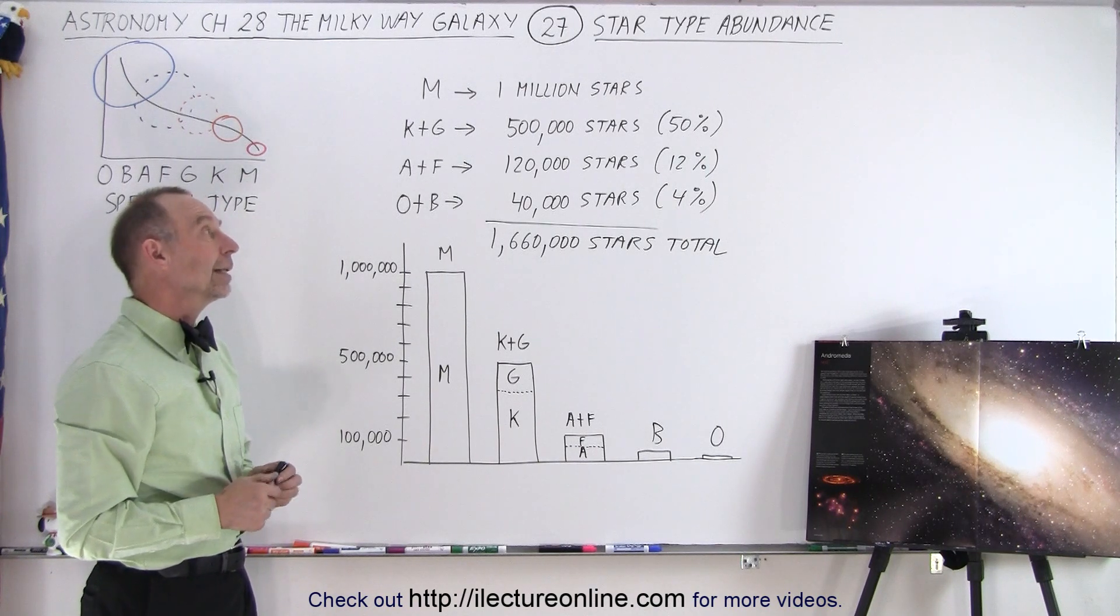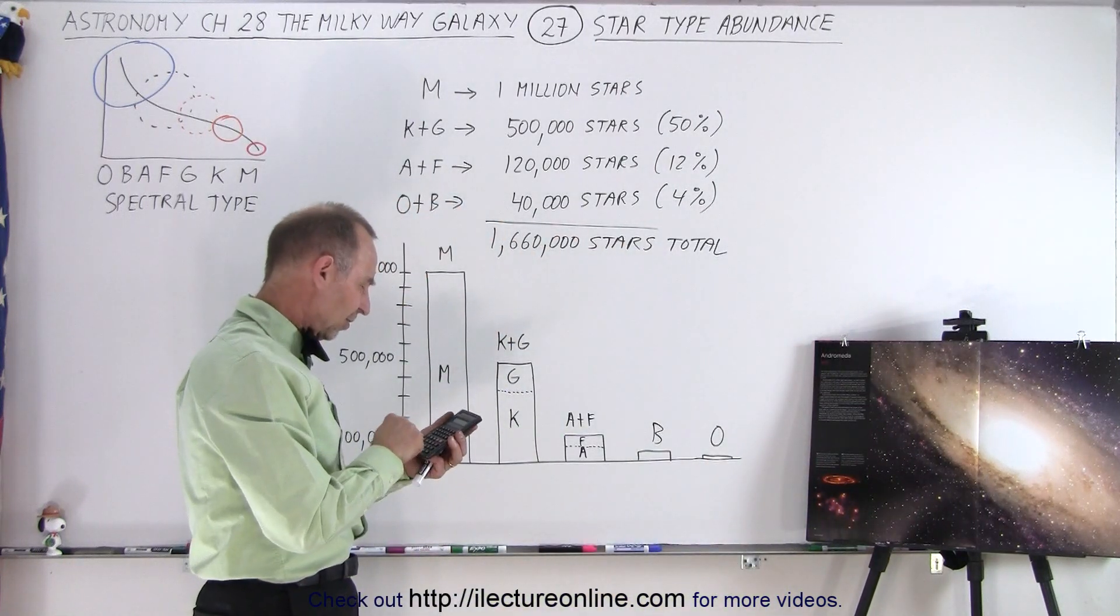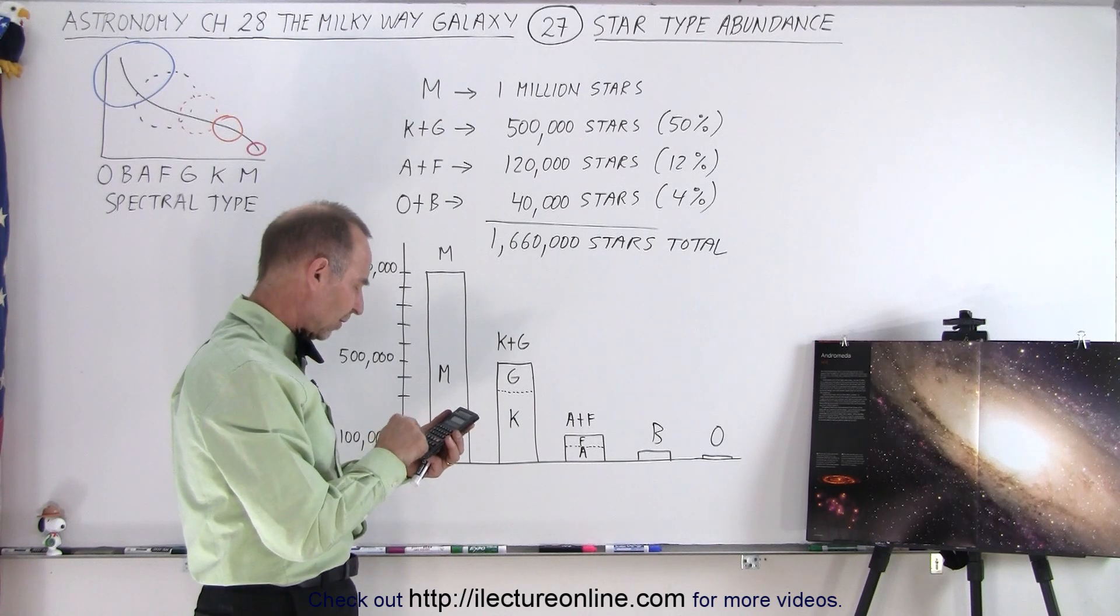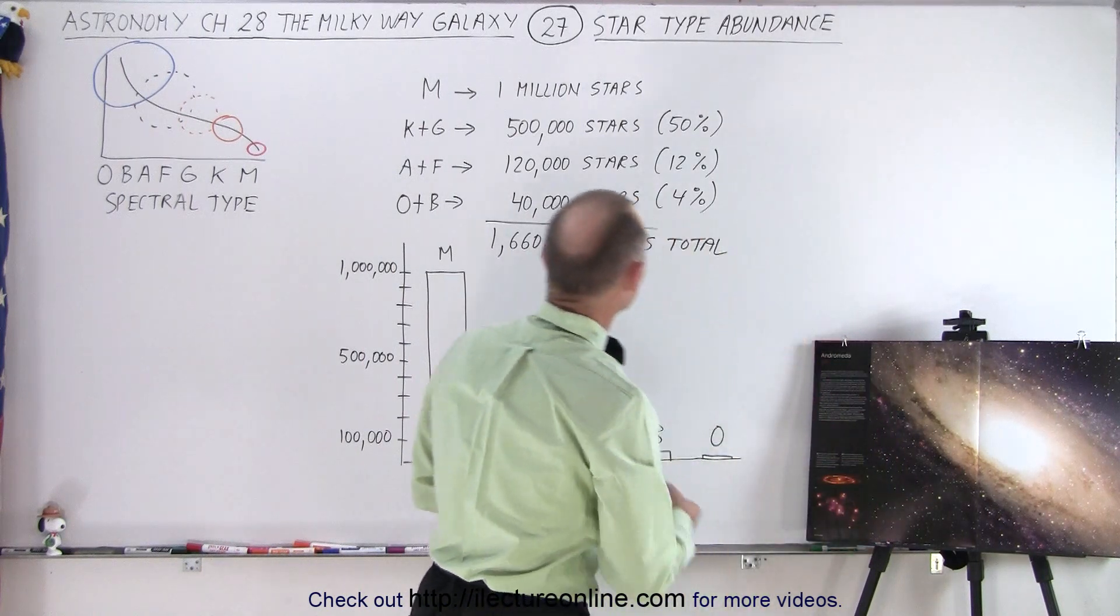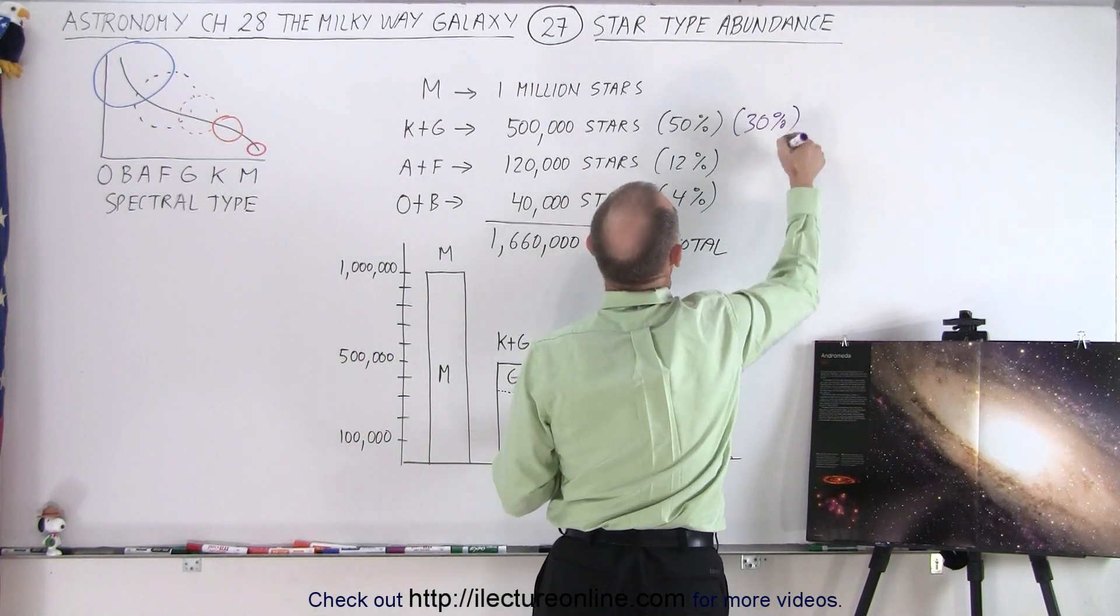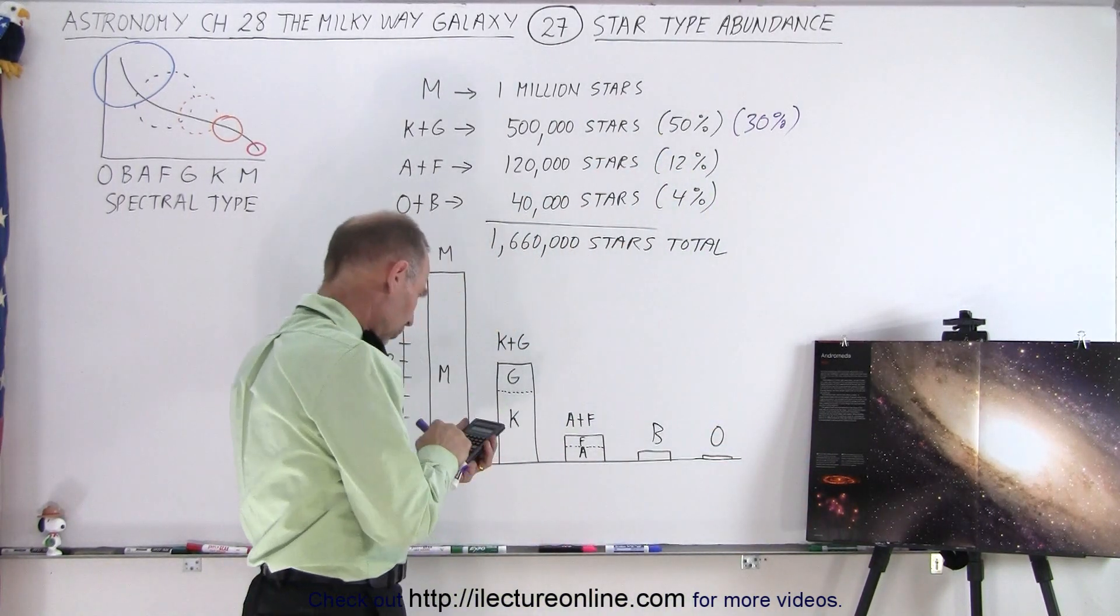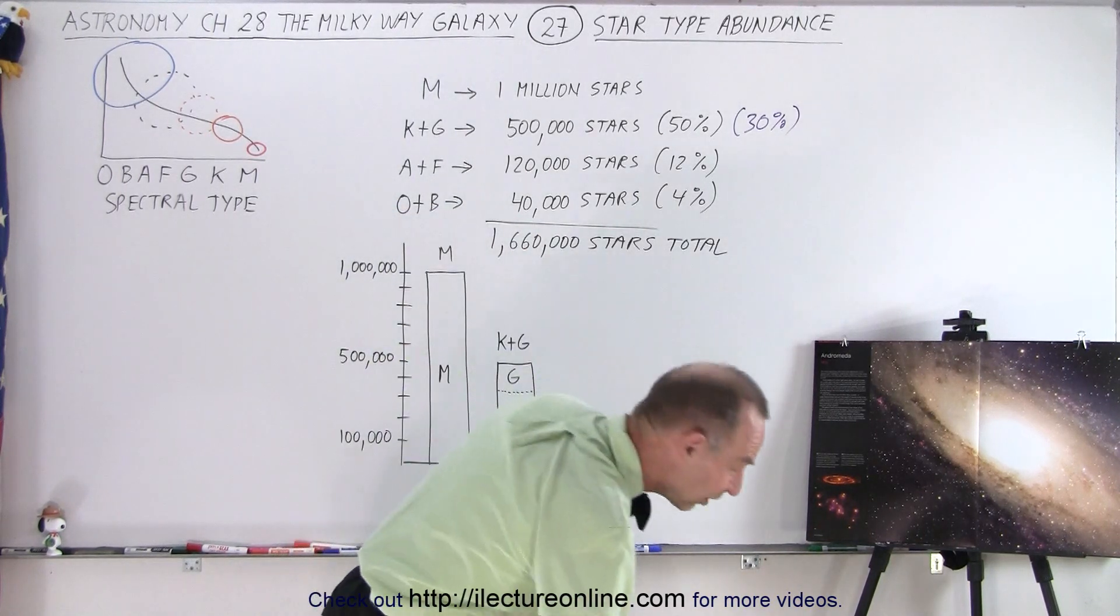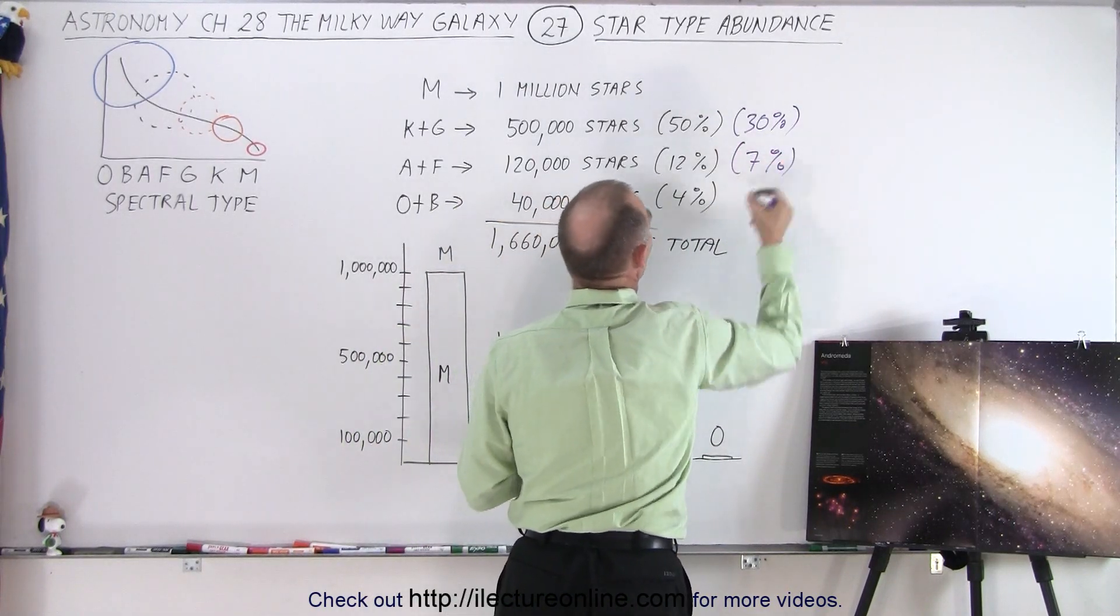Yeah, let's do the, we can calculate it like this. So 500,000 divided by 1,660,000 equals, that would be 30%. So another way of looking at it is that 30% of all the stars would be these types of stars. And 120,000 divided by 1,660, that would be about 7%. So 7% would be those types of stars.